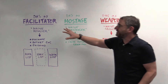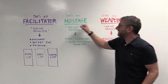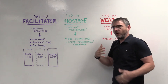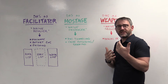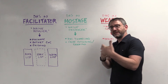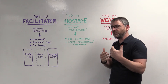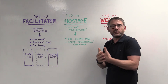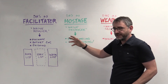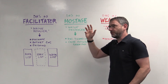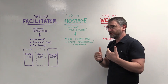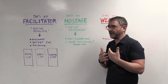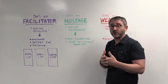So these three roles — facilitator, hostage, and weapon — are all different ways that DNS is applicable in cybersecurity. What's very interesting is how DNS can be used as a solution to detect, to block, to look for things that are anomalous on the network. We'll be talking a lot more about that soon.